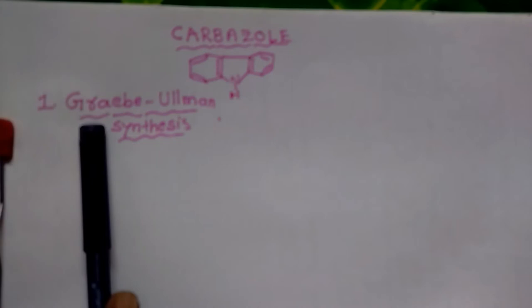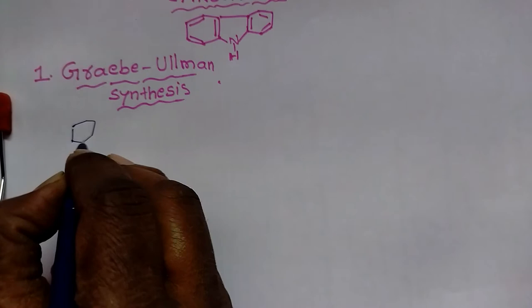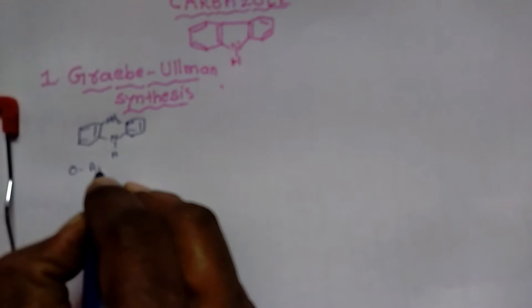First we discuss the Graebe-Ullmann synthesis of carbazole. The starting substance is diphenylamine, and at the ortho position we have the amine group. So this starting substance is called ortho-amino diphenylamine.